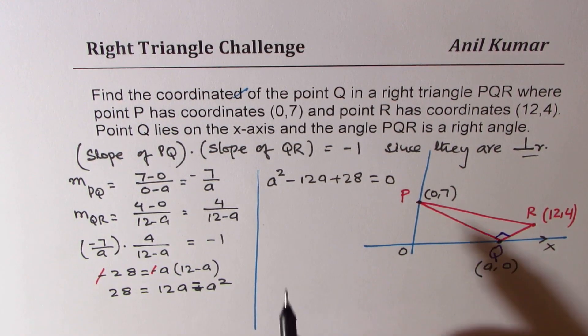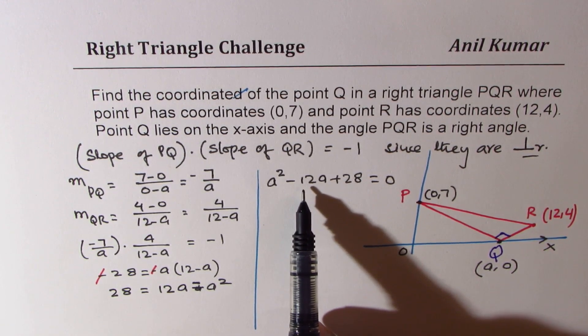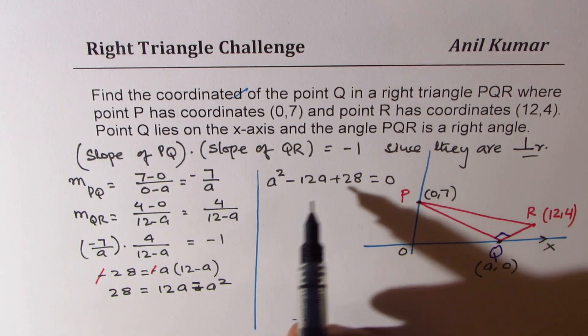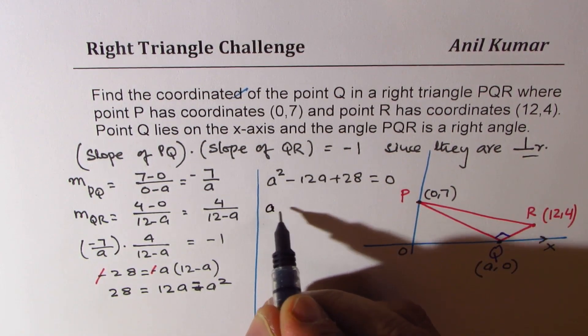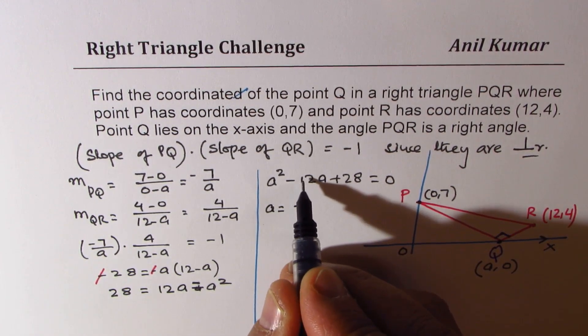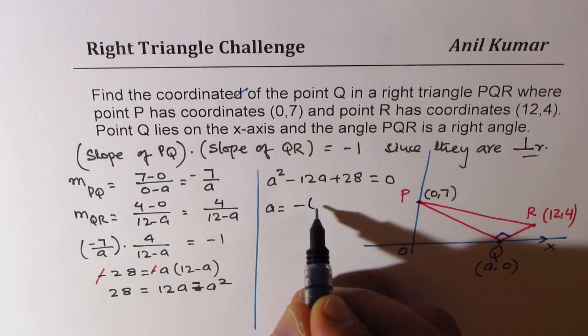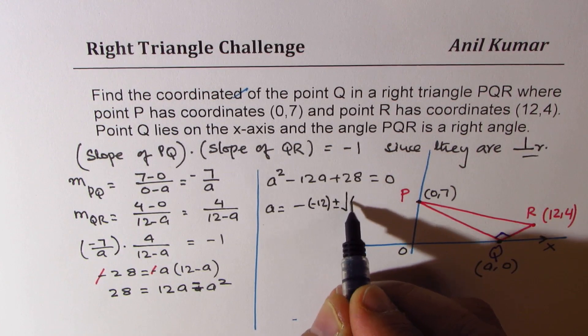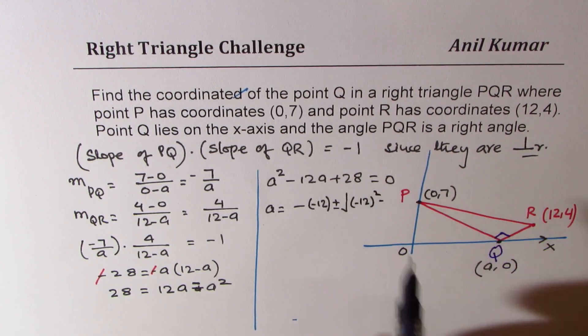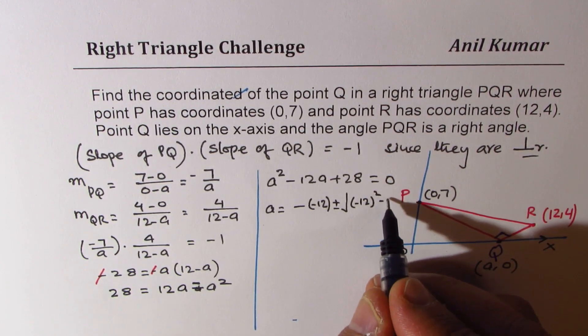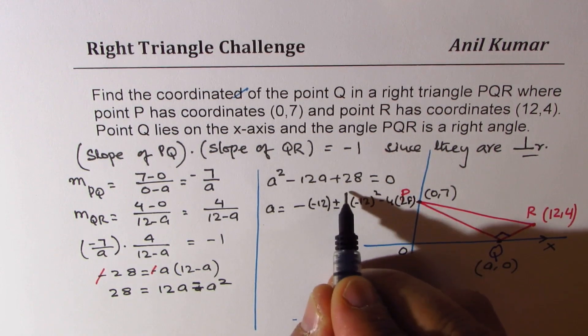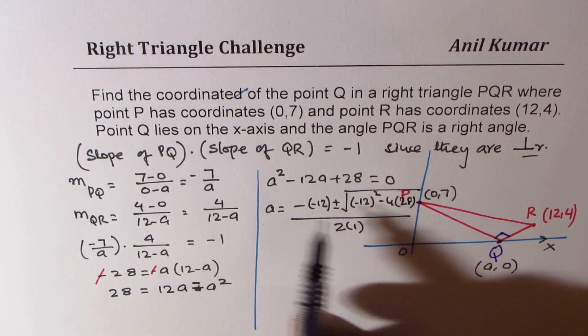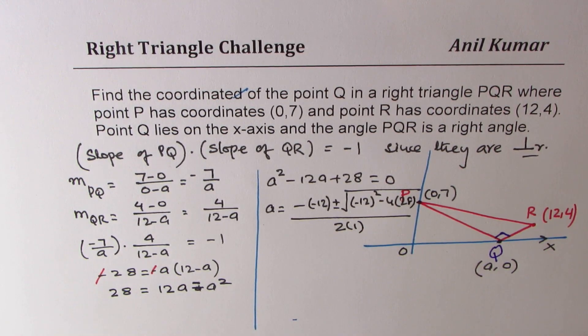Now we need product of plus 28, sum of minus 12. So we don't get any combination. Let's use the quadratic formula. a will be equal to minus b, which is minus of minus 12 plus minus square root of minus 12 square minus 4ac. That means 4 times 28. Divided by 2 times 1. So that is the value. We use the quadratic formula here.